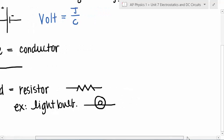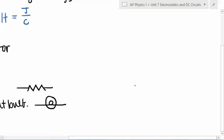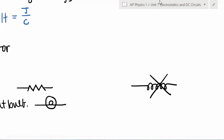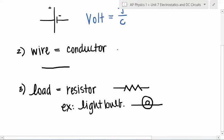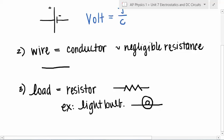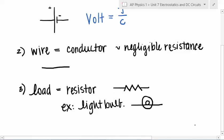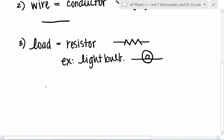An inductor looks like a coil of wires, so that's not a resistor. For our wires, we make the assumption that there is negligible resistance. In order to have resistance, in order for the current to connect and flow, you've got to have a light bulb or resistor or something like that. So let's talk briefly about what resistance is.